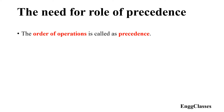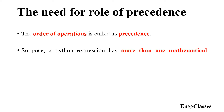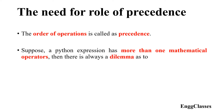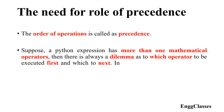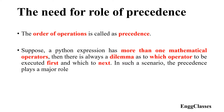For example, suppose a Python expression has more than one mathematical operator, then there is always a dilemma as to which operator to be executed first and which operator to be executed next. In such a scenario, precedence plays a very important role.